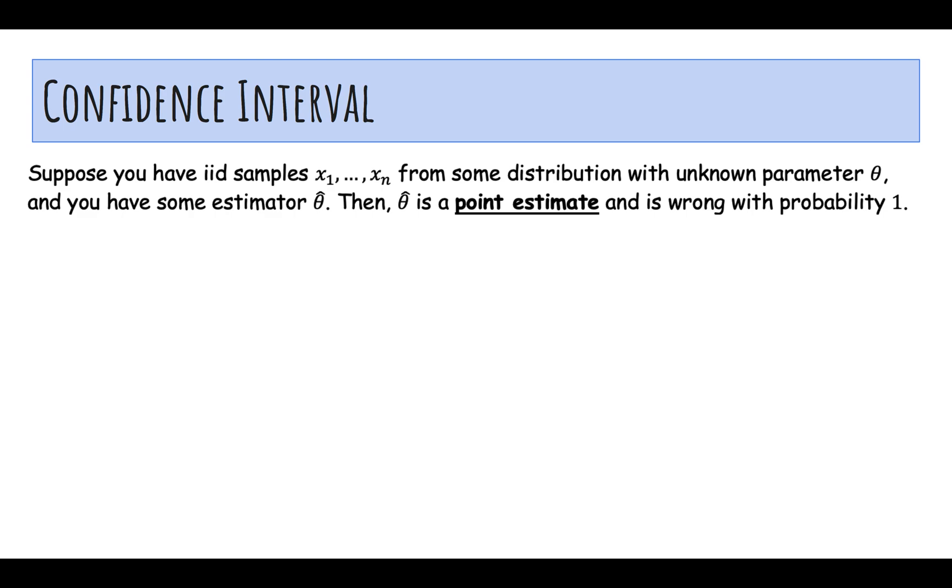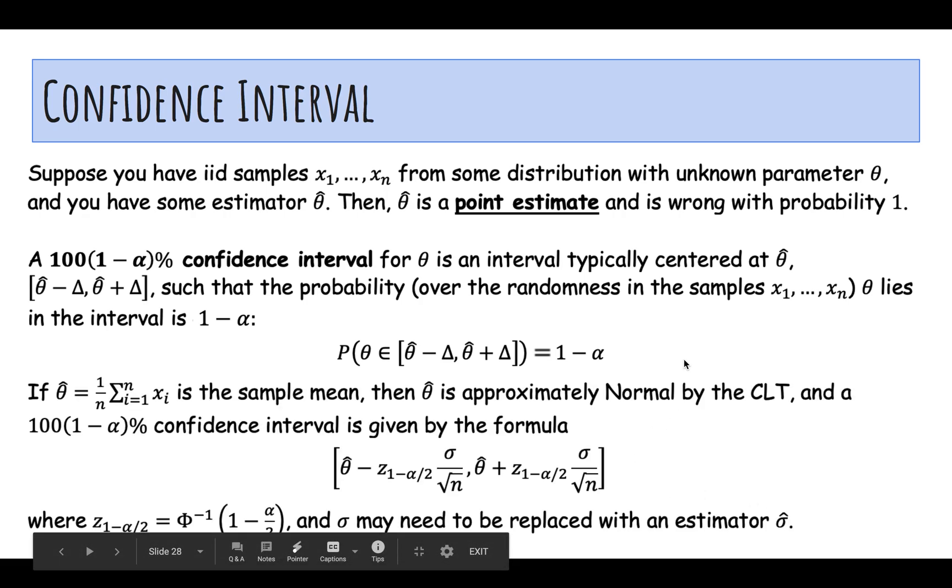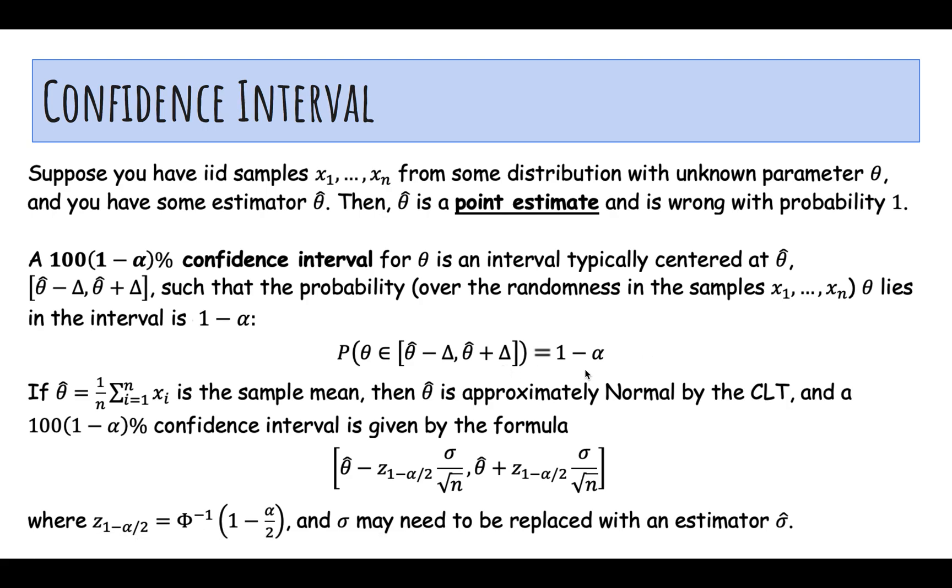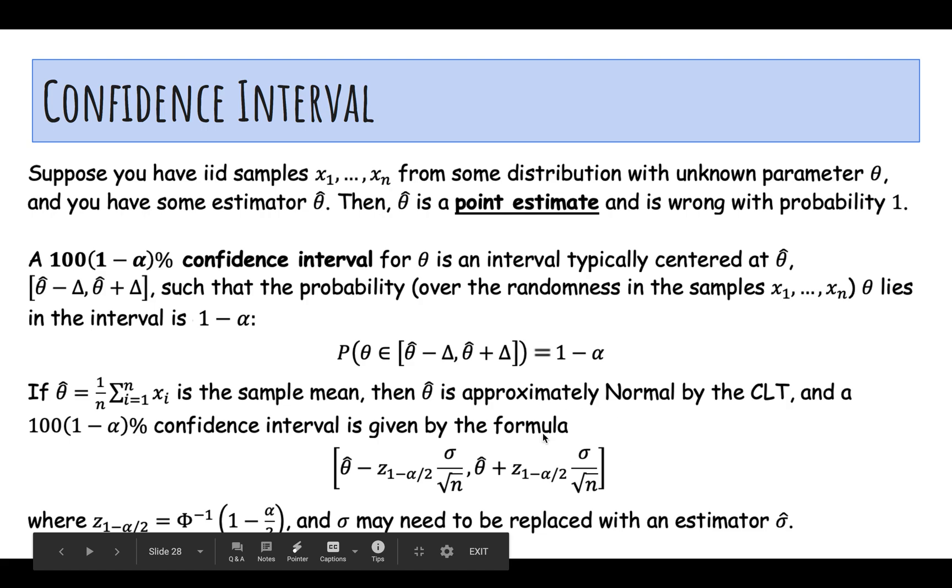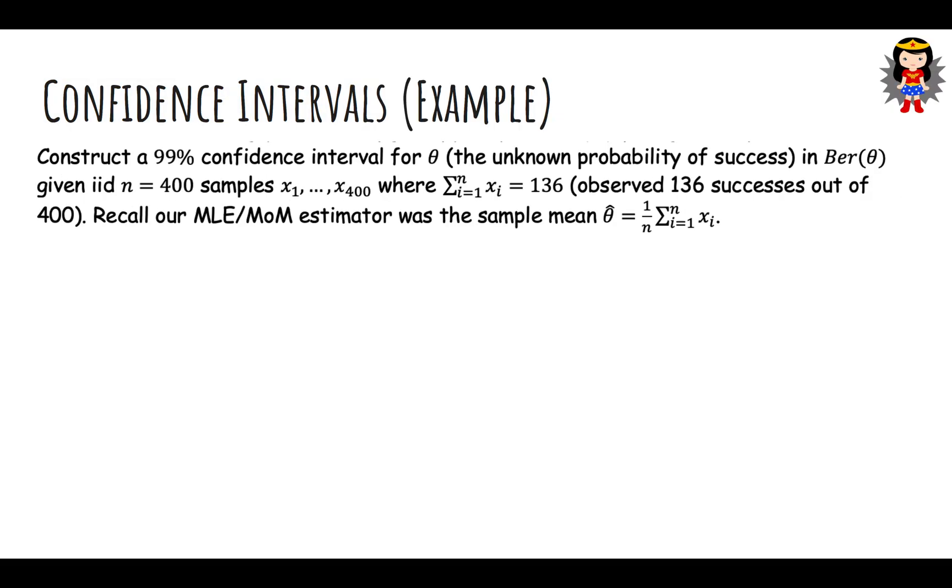To summarize, theta hat is a point estimate which is always wrong. A 100(1 minus alpha) percent confidence interval is usually centered at theta hat, such that it contains the true parameter with probability 1 minus alpha. If theta hat is a sample mean - and this is so important - sometimes you can't use this formula below because for exponential or geometric, when it's like the inverse sample mean, then you can't use this formula. If theta hat is the sample mean, then it's approximately normal, and you can go from theta hat plus or minus that many standard deviations.